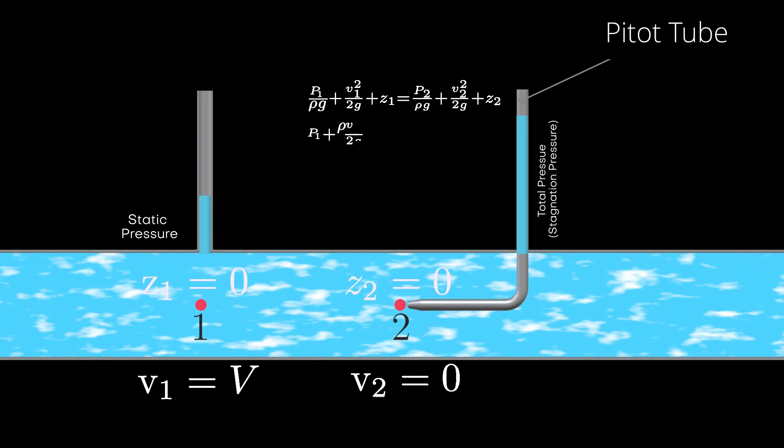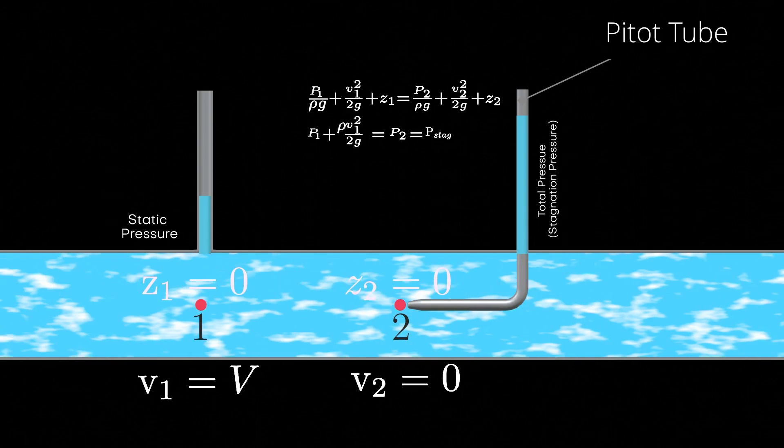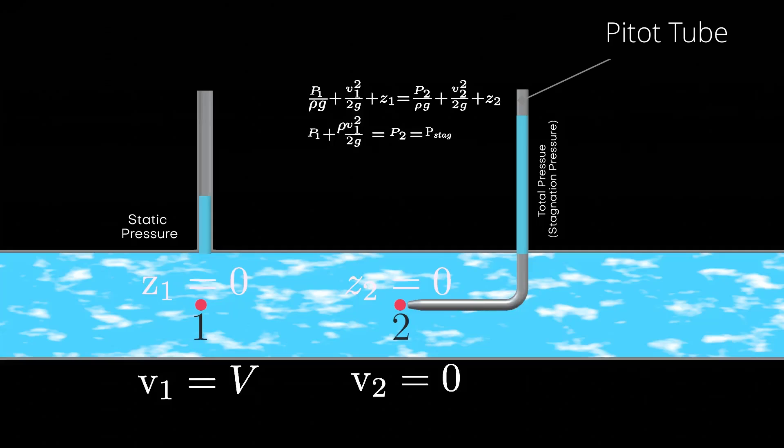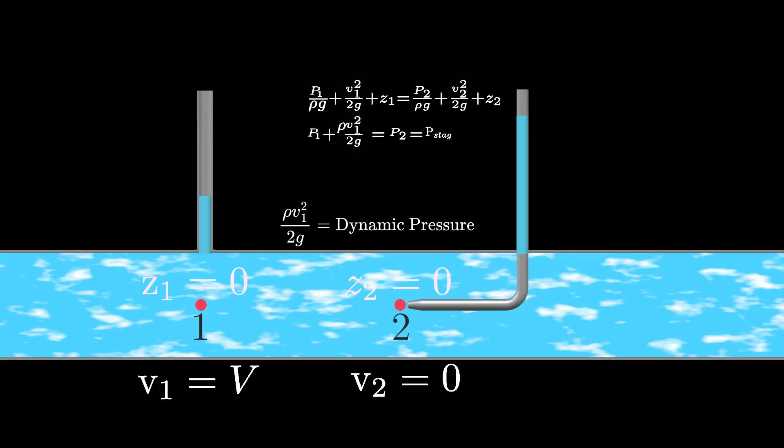If we put these values into Bernoulli's equation, we get the pressure at point 2. Stagnation pressure is the sum of static and dynamic pressure. Now, we can measure the velocity of the moving water V if we know the dynamic pressure, and it can be easily calculated by measuring the pressure head.